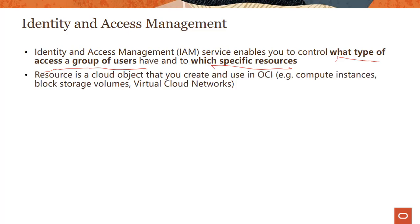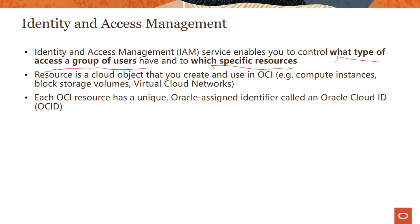Let's look into some of these terminologies. A resource is a cloud object that you create and use in Oracle Cloud Infrastructure — compute instances, block storage volumes, virtual cloud networks — each of them are represented as resources, as cloud objects. Each OCI resource has a unique identifier, an Oracle-assigned identifier called an Oracle Cloud ID, sometimes also called an OCID.